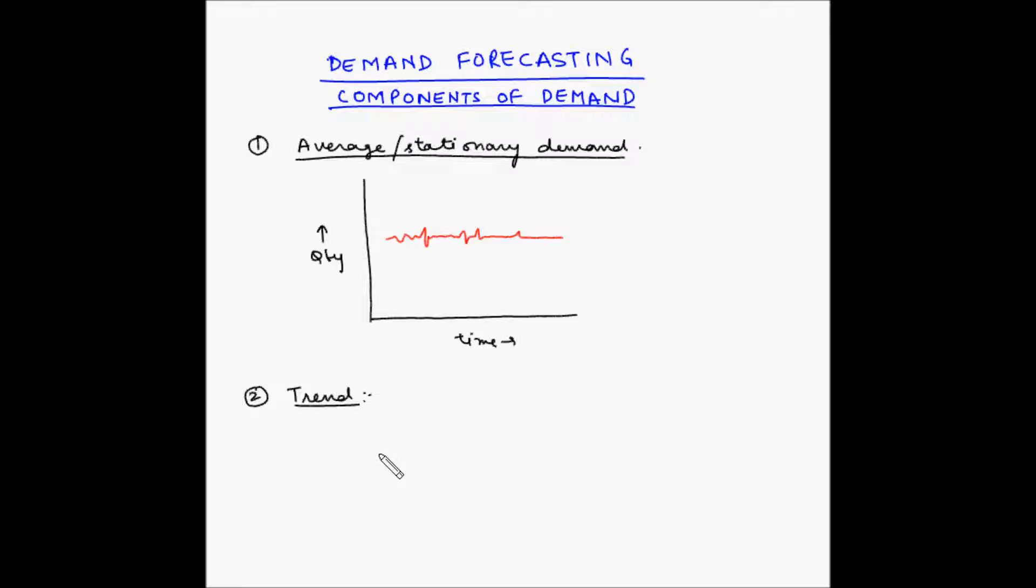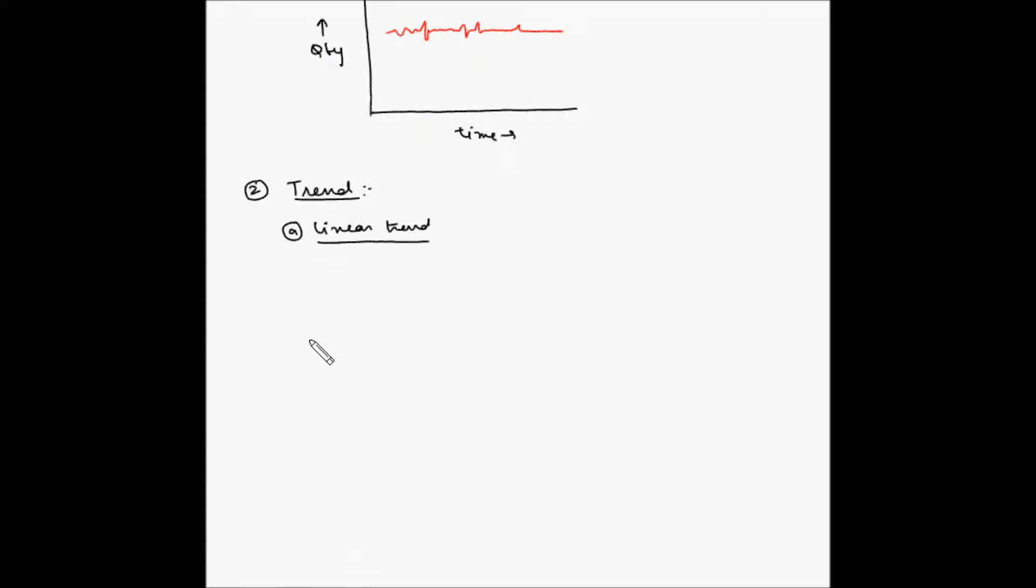Now there are four most common types of trend. So let's draw those graphs. The first one is linear trend. If we draw a graph of time versus sales, a linear trend can be represented as this line here.